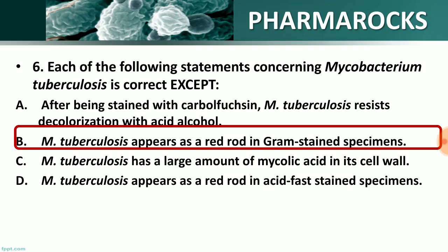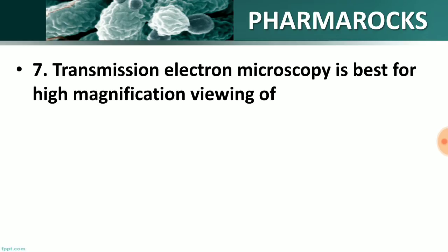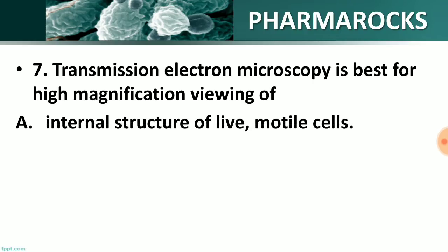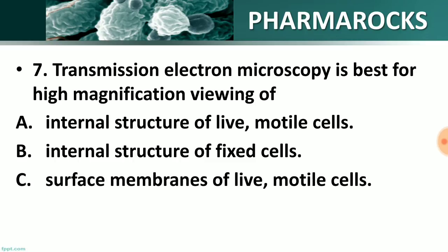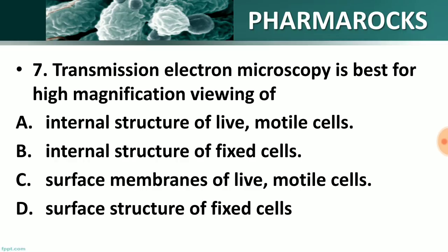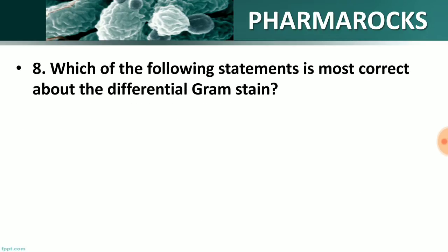Question number 7: Transmission electron microscopy is best for high magnification viewing of: A) internal structure of live motile cells, B) internal structure of fixed cells, C) surface membranes of live and motile cells, D) surface structure of thick cells. The right answer is option B — transmission electron microscopy is best for high magnification viewing of the internal structure of fixed cells.